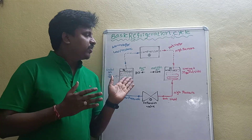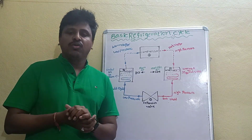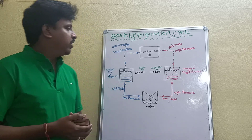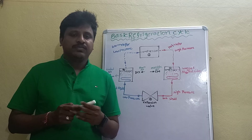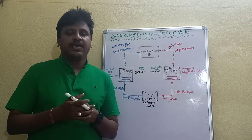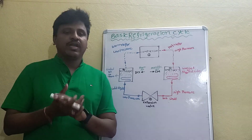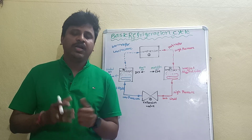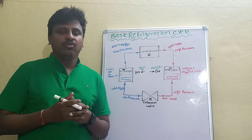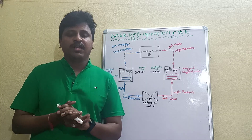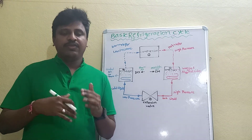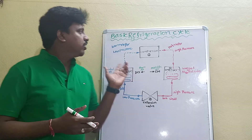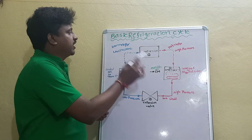We have a cycle and cooling. Let's start with the refrigeration cycle and its main parts. Basically we have a compressor, condenser, expansion valve, and evaporator coil. This is the basic refrigeration cycle and the cooling process.